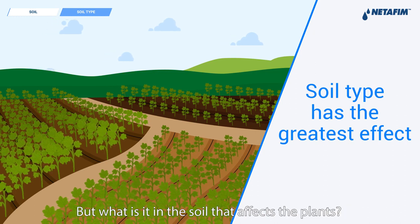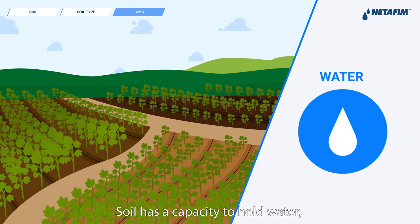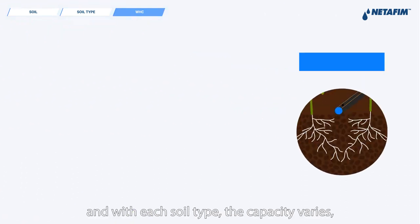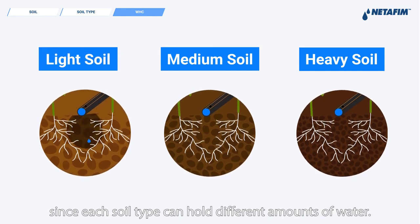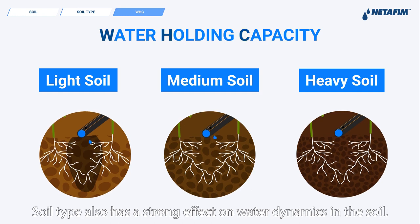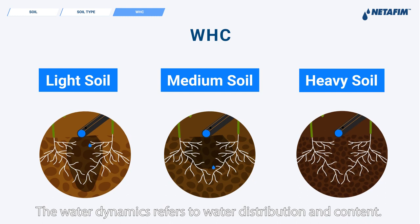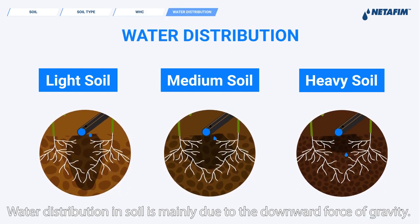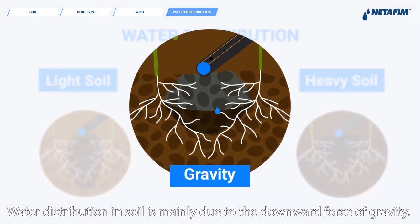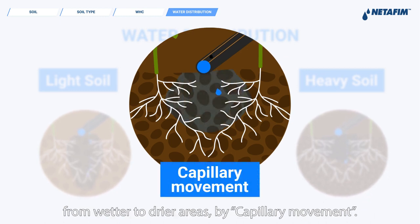But what is it in the soil that affects the plants? It's mainly the water in the soil. Soil has a capacity to hold water, and with each soil type the capacity varies, since each soil type can hold different amounts of water. We call this water holding capacity. Soil type also has a strong effect on water dynamics in the soil — referring to water distribution and content. Water distribution in soil is mainly due to the downward force of gravity. Water also moves in all directions through very small spaces from wetter to drier areas by capillary movement.